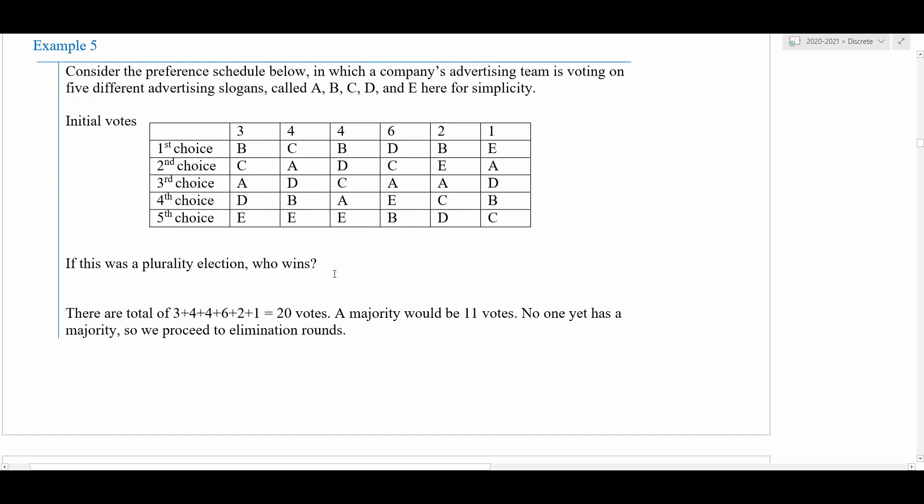In Example 5, we have a preference schedule in which a company's advertising team is voting on five different advertising slogans. For simplicity we're just going to call them A, B, C, D, and E. These are the five different slogans and they are voting on which one to go with.